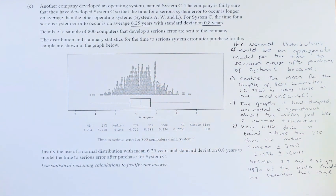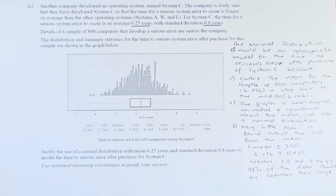It's only one question. It's an excellence question and this is a justification type of question. Another company developed an operating system named System C. The company is fairly sure that they have developed System C so that the time for a serious system error to occur is longer on average than the other operating system, A, W and L. For System C, the time for a serious system error to occur is on average — the mean — of 6.25 years with a standard deviation of 0.8. Details of a sample of 800 computers that develop a serious error are sent to the company. The distribution and summary statistics for the time for the serious system error after purchase for this sample are shown below.